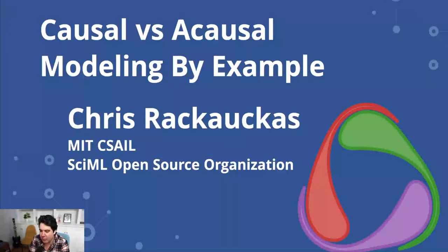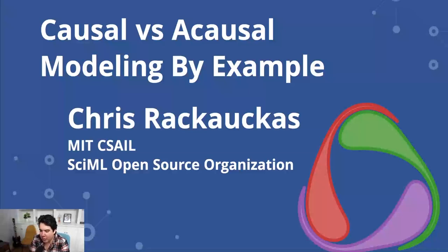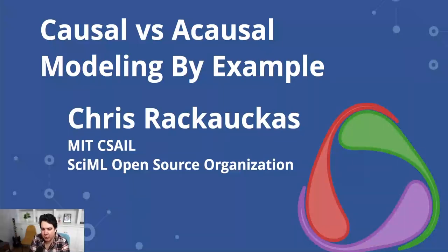Hello, I'm Chris Urkakis from the MIT Computer Science and AI Laboratory in the SciML Open Source Organization. What I want to talk about today is causal versus acausal modeling. This is a topic we've talked about a lot with the Modeling Toolkit and Julia tools built around acausal modeling, but I think we haven't had a very high-level discussion of why you want to do acausal modeling over other approaches. So I wanted to bring this to something very easily digestible.